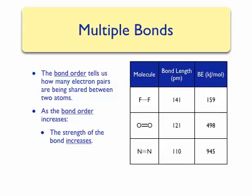As the bond order increases, the length of the bond decreases. The fluorine molecule has a bond length of 141 picometers, while the nitrogen molecule has a bond length that's slightly shorter at 110 picometers.